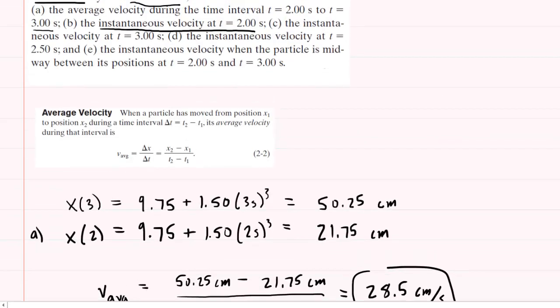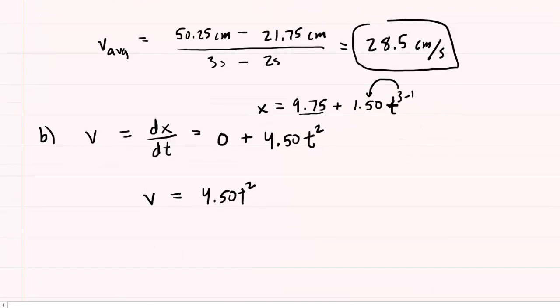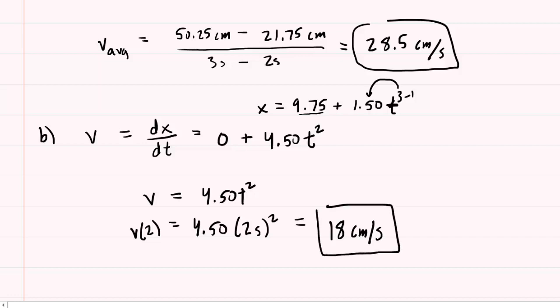Remember, in part B, the value of time was 2 seconds. So we're going to compute v of 2 — we'll simply plug 2 seconds in for the value of t. And so 4.50 times 2 squared turns out to be 18. So we end up with 18 centimeters per second. So this would be the correct answer to part B.